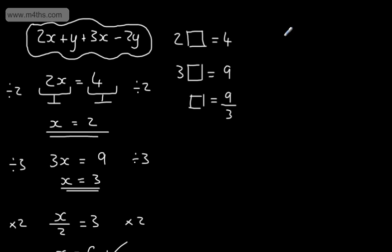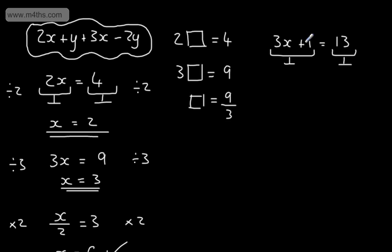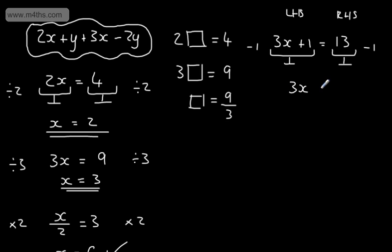Let's look at a slightly harder example. Let's say we have 3x plus 1 is equal to 13. This time I have plus 1. What we need to do is work this backwards. I want to find the value of x. x started its life, it was multiplied by 3 and added 1 to it. So I'm going to go ahead and solve for x. Whatever I do to one side of the equation, I need to do to the other side. I want to isolate 3x on the left-hand side. So I'm going to subtract 1 from both sides of the equation. That's going to leave me 3x is equal to 12.